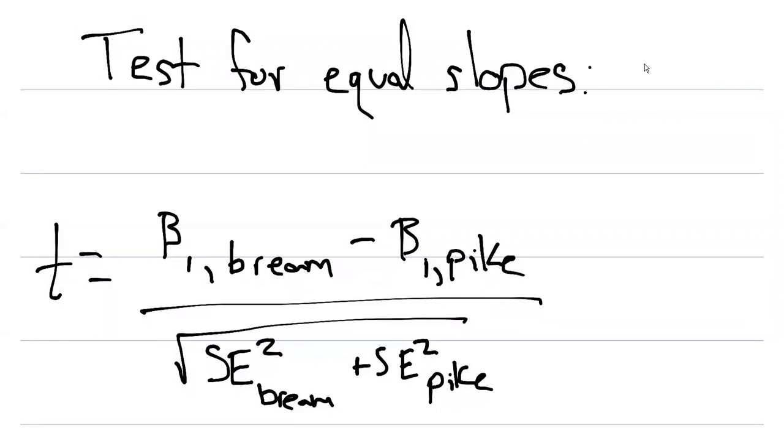In the numerator of the test statistic we need to know the slope for the bream and the slope for the pike, and then in the denominator we take the square root of the squared values for the standard errors.